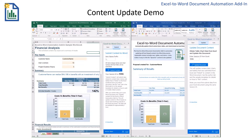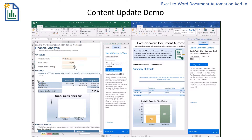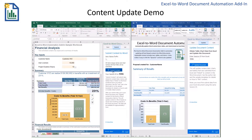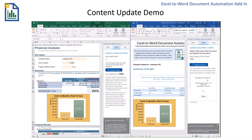So that when you make changes to Excel inputs, you can easily update that dynamic content in Word. For example, if I change the customer name to Customer XYZ, the user licenses to 10, and the appearance of the chart to look like that, I'm then going to submit the content so it's available to Word. Then I'll go over to Word and update the content. You can see that all of the dynamic content — the text, table, and chart — update to match the data in Excel.